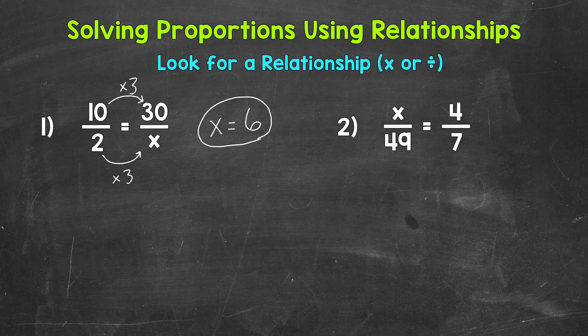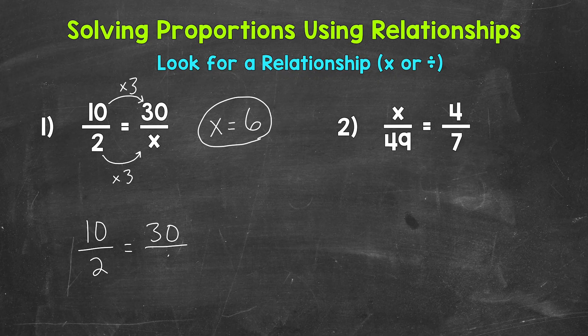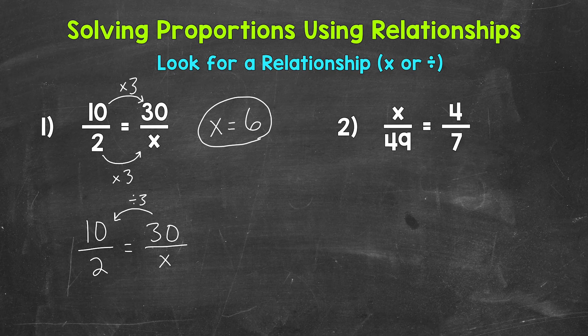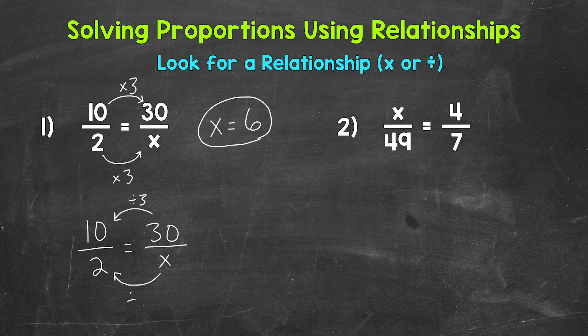Now we can also go the other way and use division. So you can go either way when looking for that relationship. So let me rewrite the ratios down below. So 10/2 = 30/x. So you may have noticed that 30 divided by 3 equals 10. So we can think what divided by 3 equals 2? Well 6.